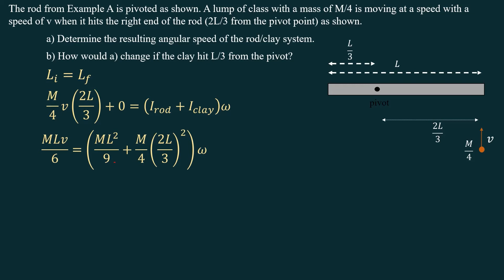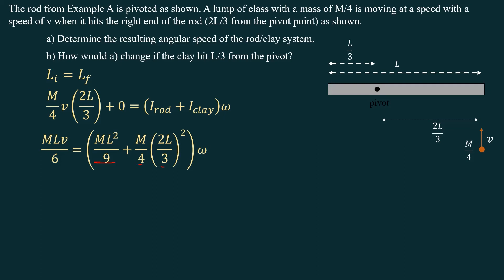Okay, so I simplified the left side there, and then on the right side, so the rod, this is what we found in example A, that's I for the rod. And then for a point mass, which we're treating the clay as, the moment of inertia is MR squared, so this is the mass. The distance to the pivot point is that, and we square it. And that's what happens when you simplify it on the right side. Now we can just solve for omega, and omega is going to be 3V over 4L.